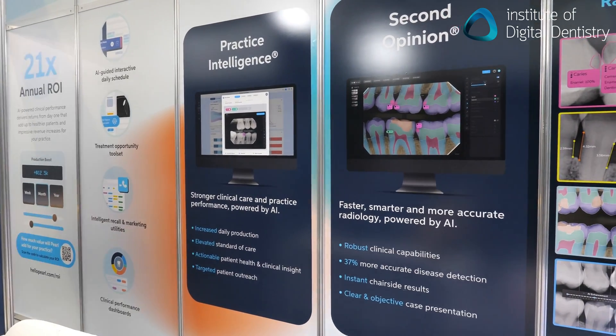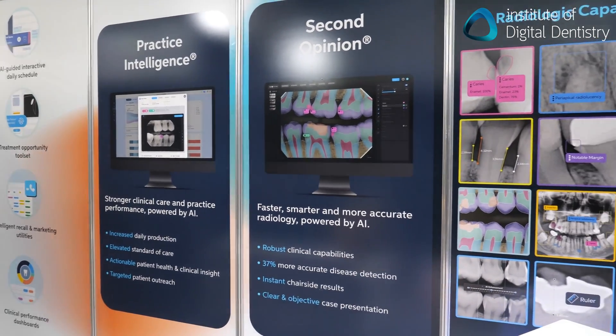Absolutely. It can only speed up diagnosis and make it easier. How long does Pearl AI take to actually process a radiograph and provide a second opinion? About eight to 30 seconds, depending on the internet. So if you're taking a series of images, by the time you take your second image, the first one will be up. That's pretty fast — I don't think any dentist could compete with that.